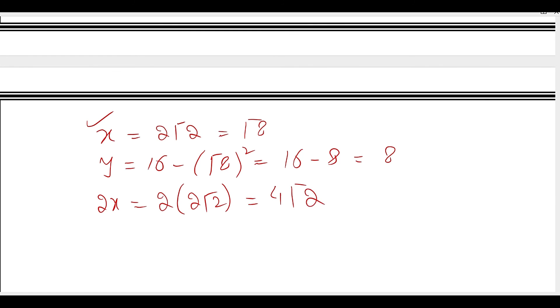At x = 2√2, the width is 2x = 4√2. For the height, y = 16 - x² = 16 - 8 = 8. So the dimensions are width 4√2 and height 8.